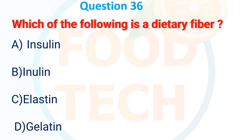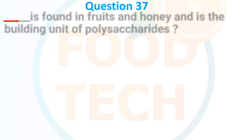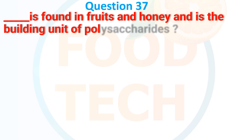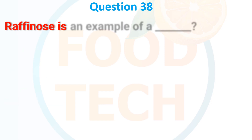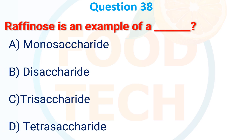Question 33: Which of the following is a dietary fiber? A. Insulin, B. Inulin, C. Elastin, D. Gelatin. The answer is B. Inulin. Question 34: Which is found in fruit and honey and is the building unit of polysaccharides? A. Lactose, B. Maltose, C. Fructose, D. Glucose. The answer is C. Fructose.